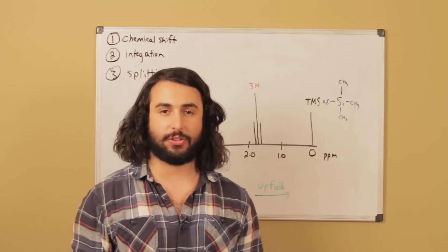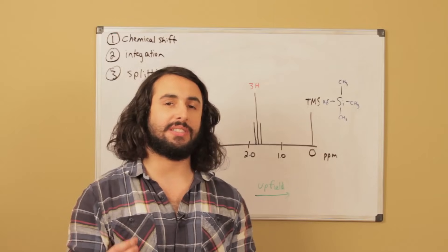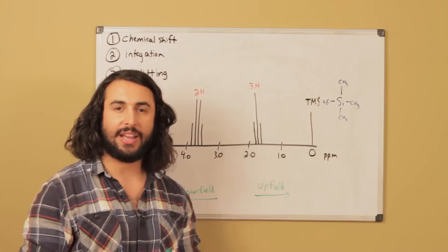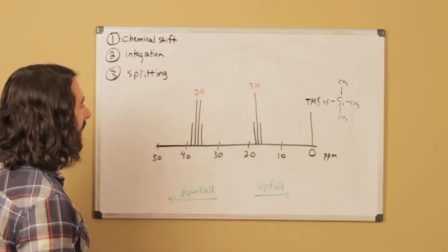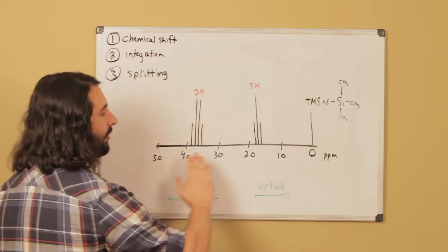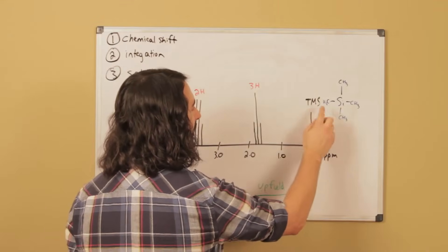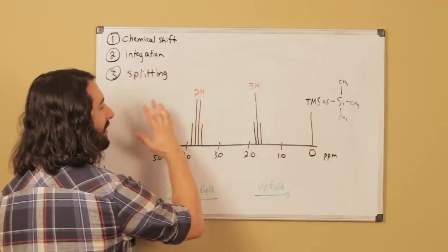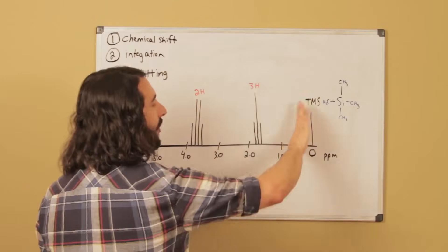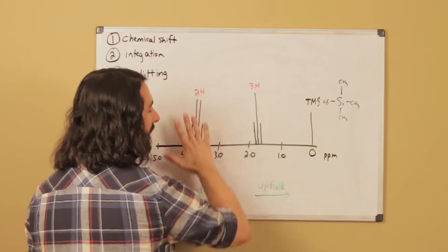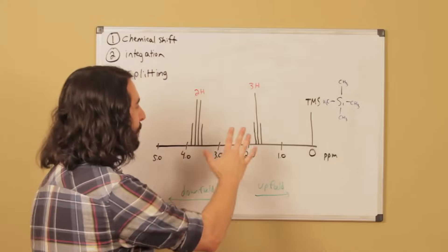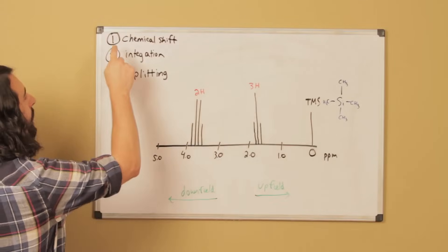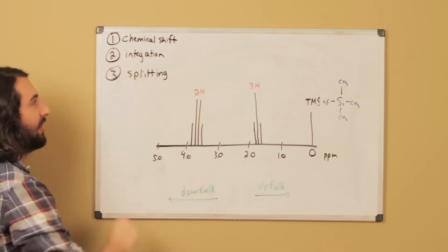Here I've drawn a sample NMR spectrum, and we're going to talk about the three main pieces of data we try to glean from any NMR spectrum. First, we have a reference peak called TMS — tetramethylsilane — and everything else is given in parts per million relative to TMS. That reference peak is not part of our data. The actual data is everything else. There are three things we want to take into account for any resonance on a spectrum: chemical shift, integration, and splitting.